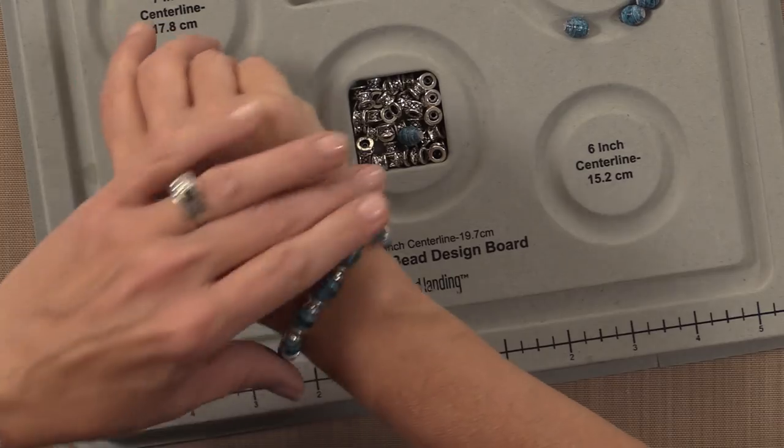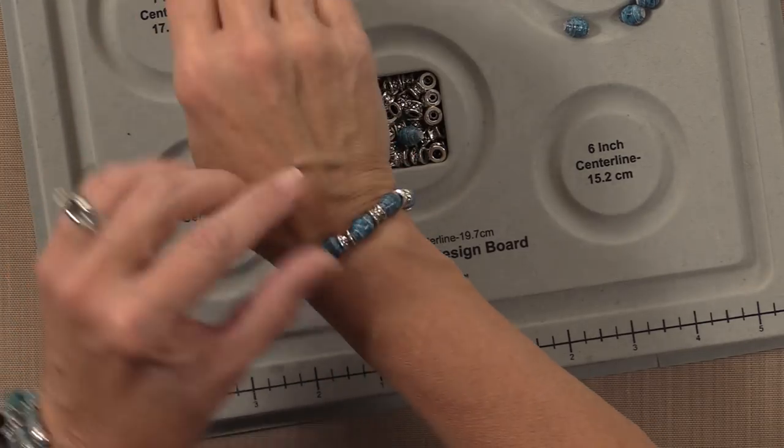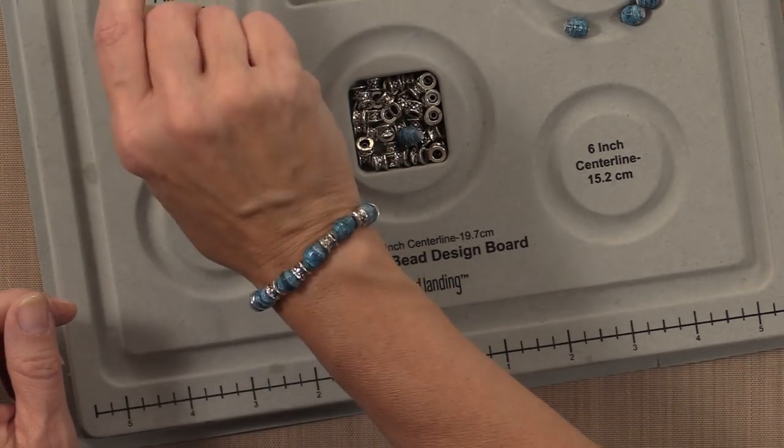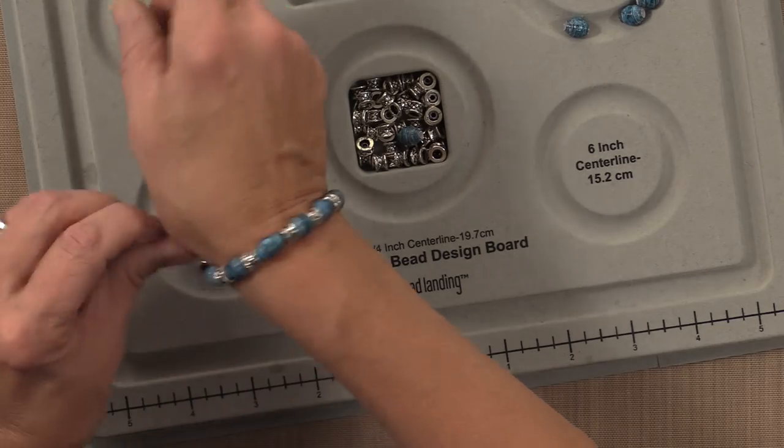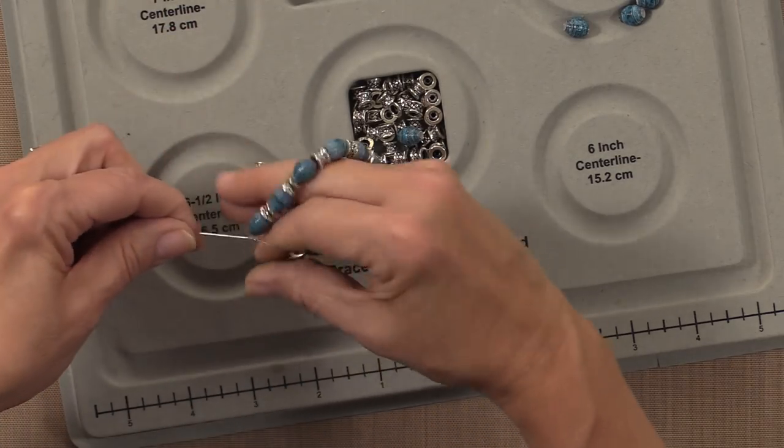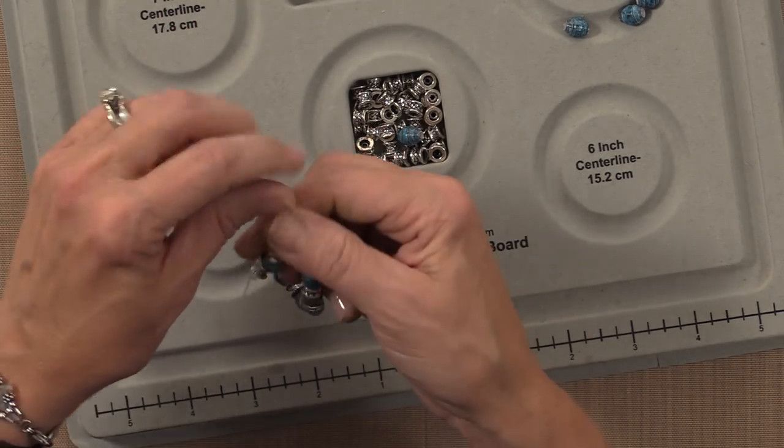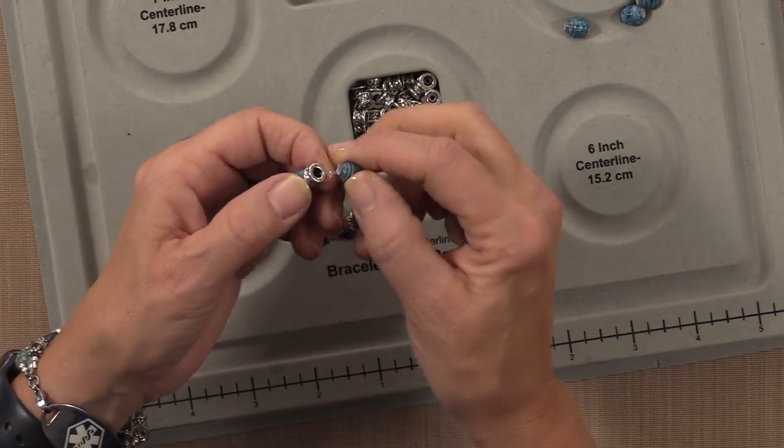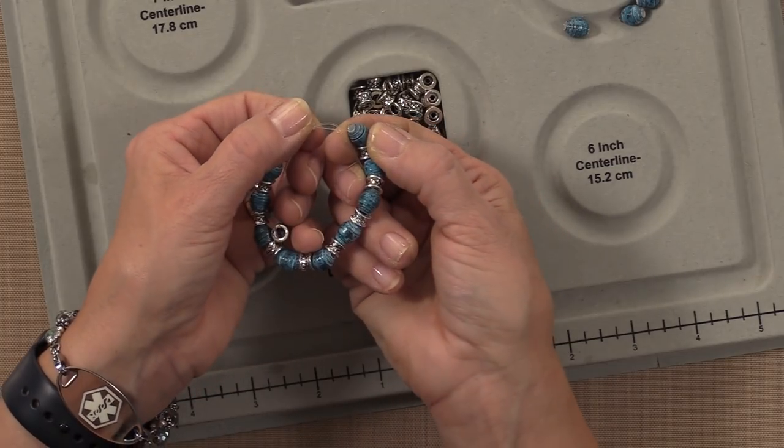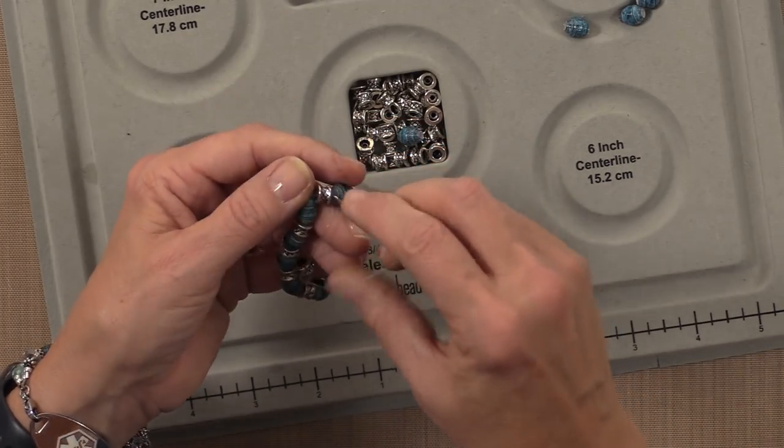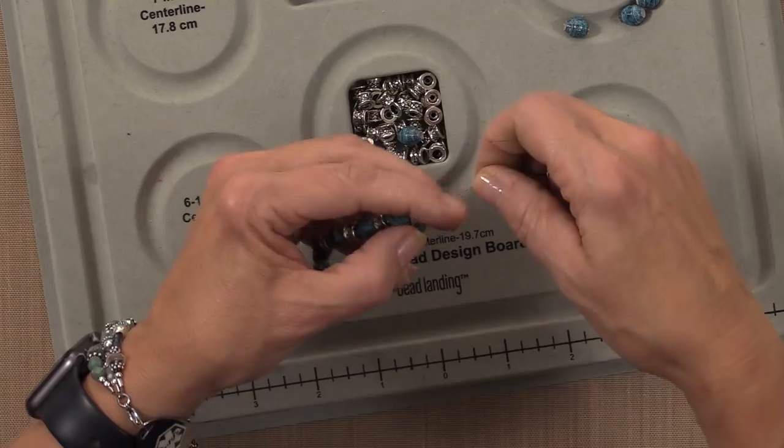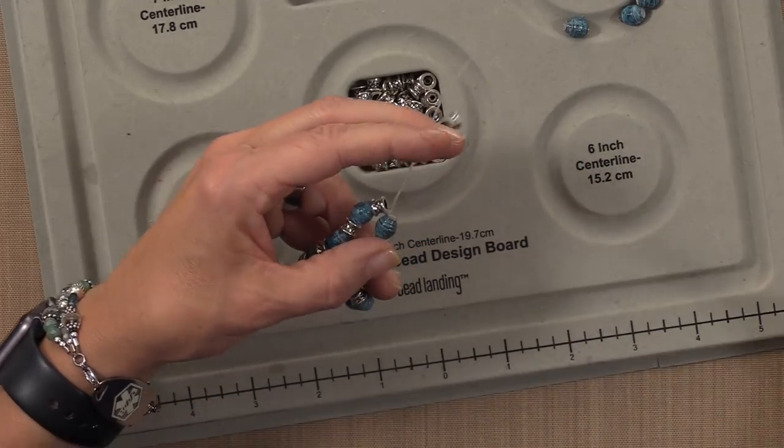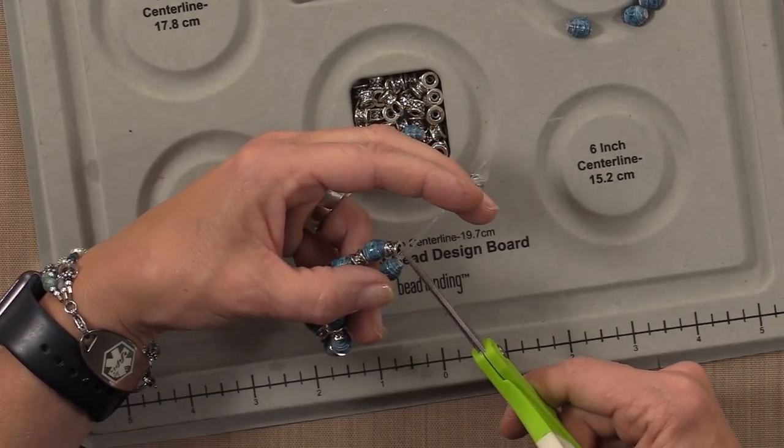And then I will test it on myself first to make sure it looks right. That looks pretty good. And then I will add a dot of super glue, which I don't have here, but right on to that little knot. And then once that's done, I'll take my scissors. And I will cut it very close to the knot.